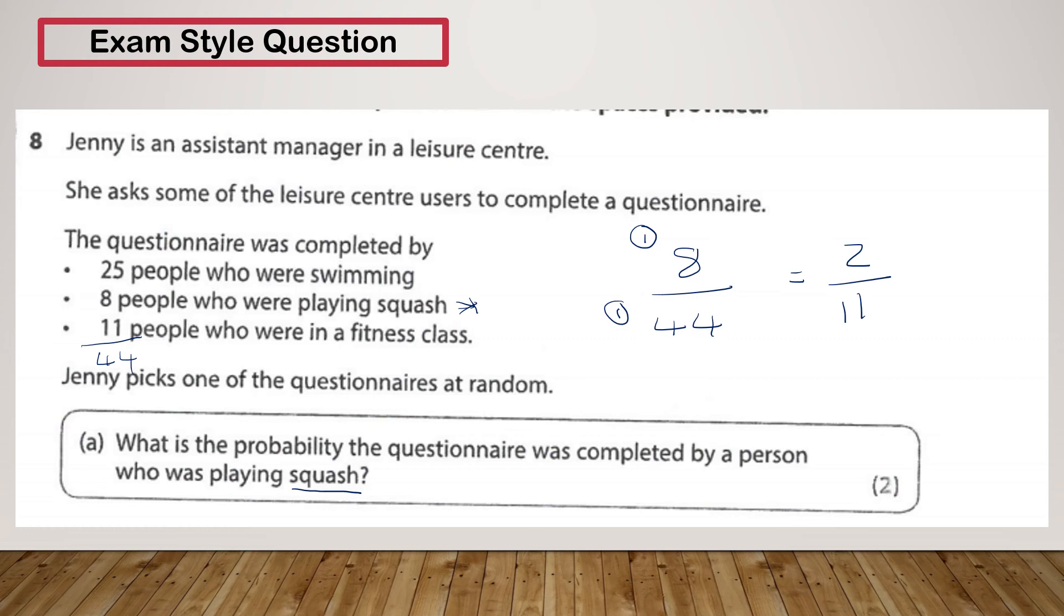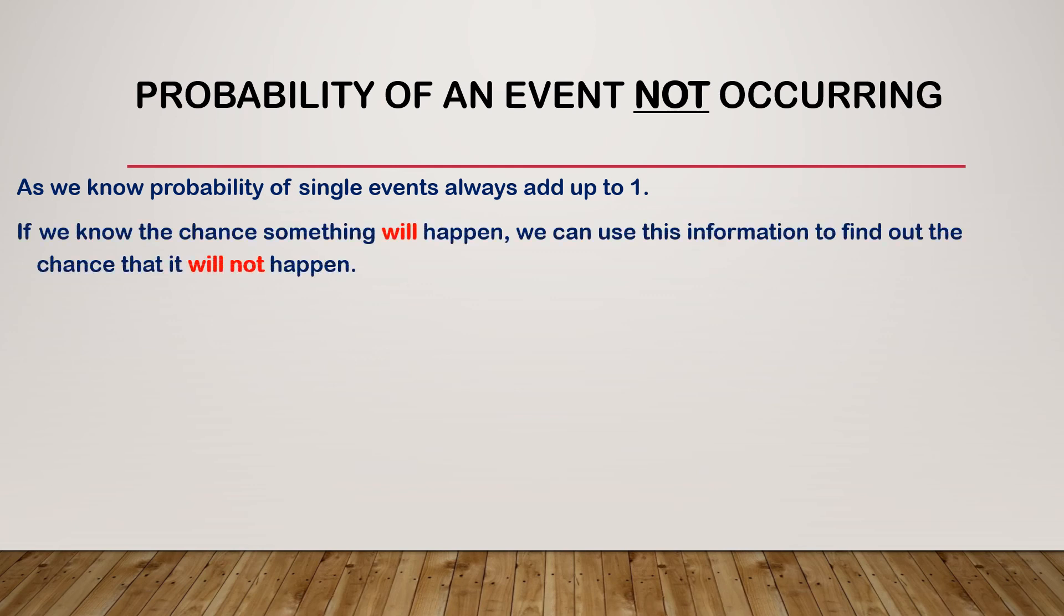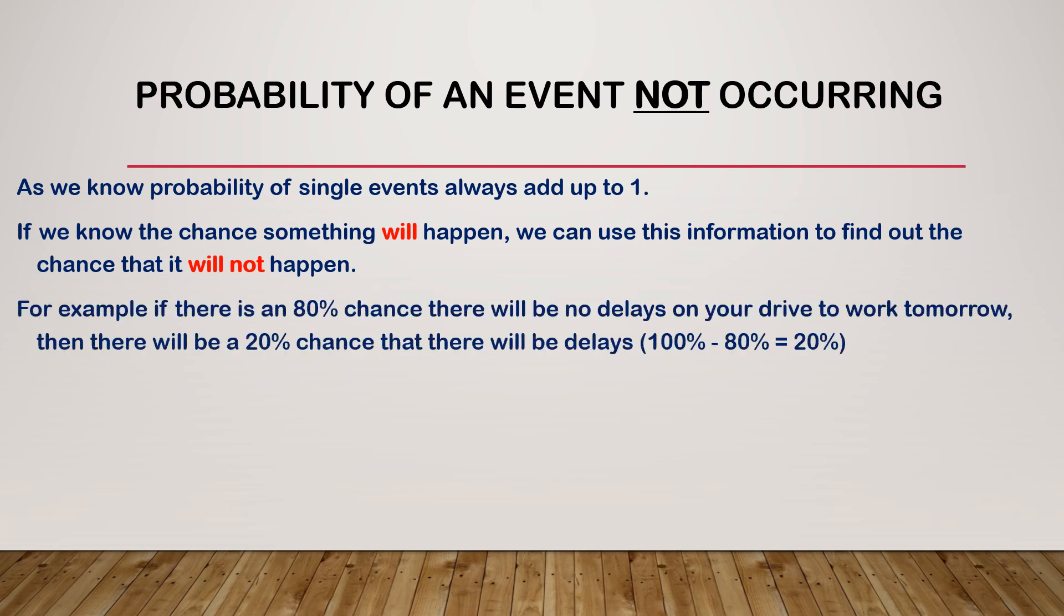Now that we've looked at the probability of events happening, let's look at the probability of them not happening. So as we know, probability always adds up to 1. If we know the chance that something will happen, we can use that information to find out the chance that it won't happen. So if there's an 80% chance there's going to be no delays on your drive to work tomorrow, then there's going to be a 20% chance that there will be delays, because 100% take away 80% gives us 20%. And there's a 100% chance that we will go to work.